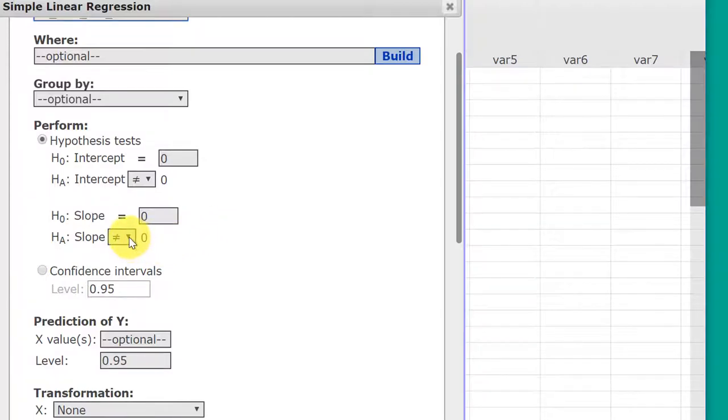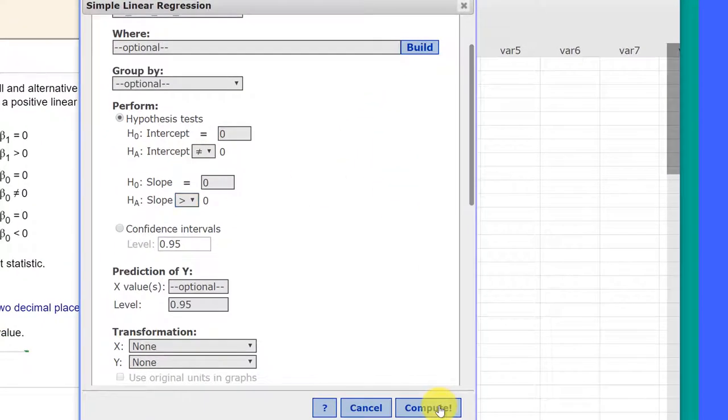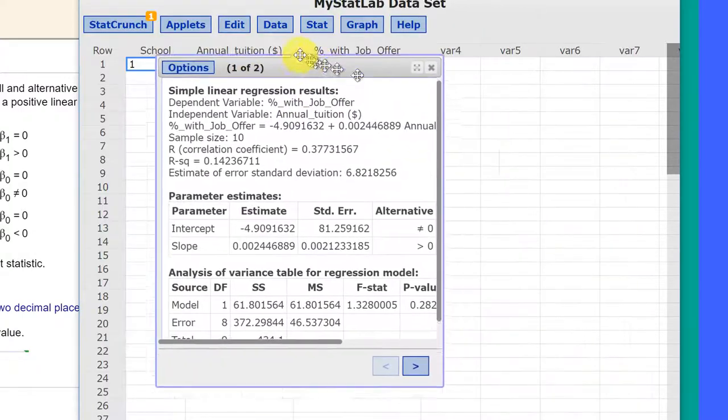But the slope, we have to set that particular test up. And here we want beta 1 to be greater than zero, a positive slope. So we just click Compute, and we get our answers there.